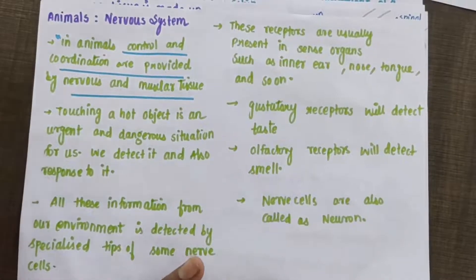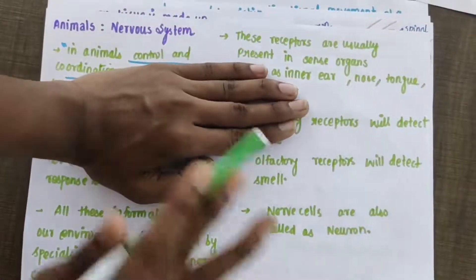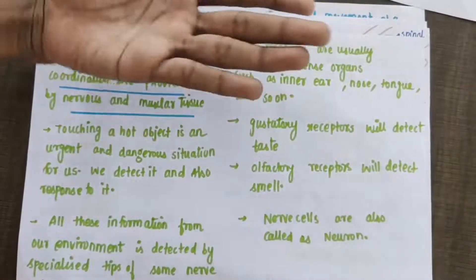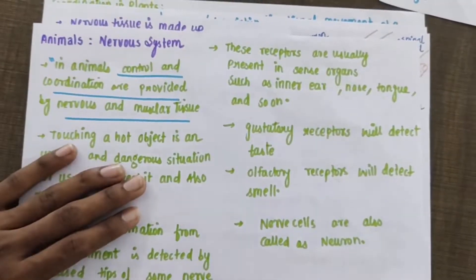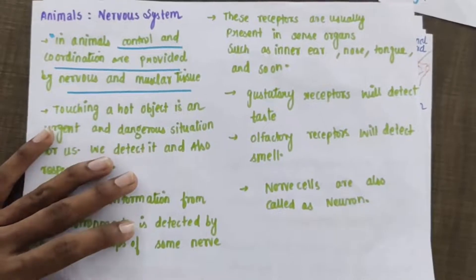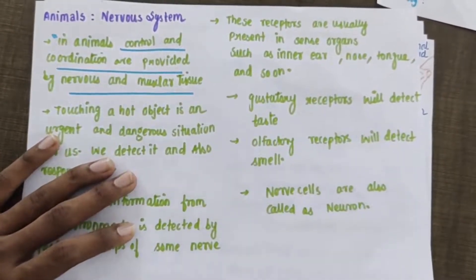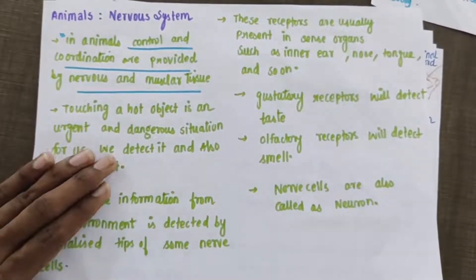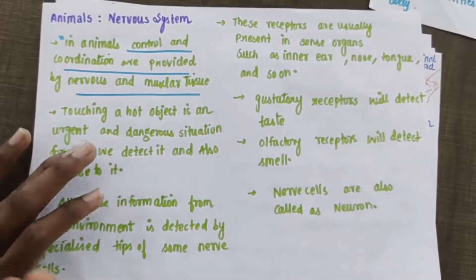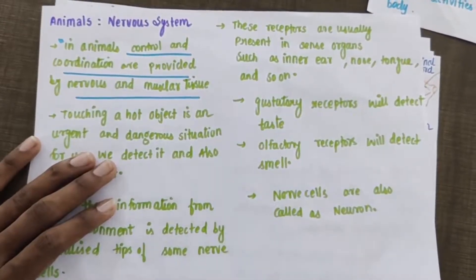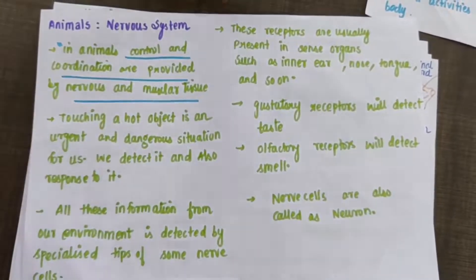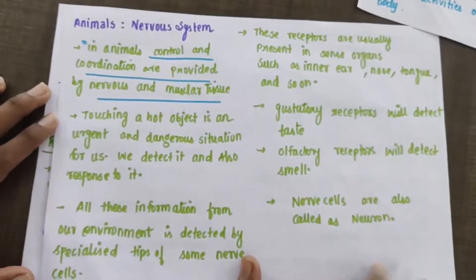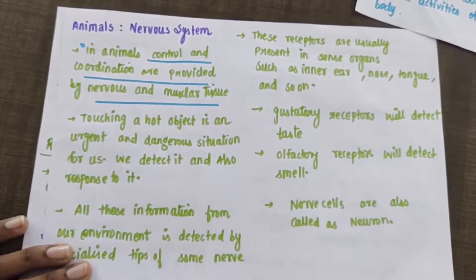If you touch a hot object, a message goes to the brain through the nerves, and the brain signals the muscles to move. Because of the movement of muscles, we are able to react — for example, pulling away from a hot object. In animals, control and coordination is brought about mainly by two tissues: nervous tissue and muscular tissue. This quick pulling away is because of something called reflex action.